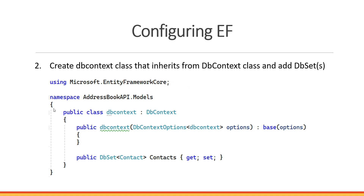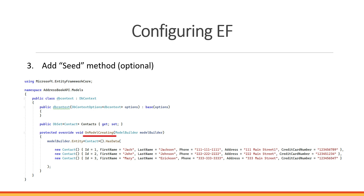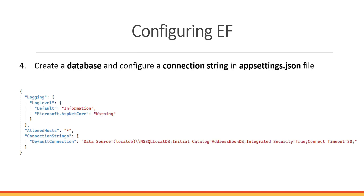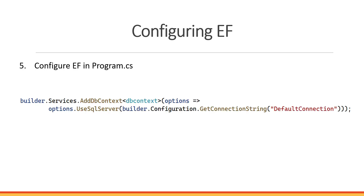The next step is optional: we can add a seed method. When Entity Framework creates our database and table, it will seed some initial data for testing. If you don't do it you'll have to put data in manually, but it's a quick way to get data into your database for testing. We'll also create a database, get a connection string, and place it inside the appsettings.json file.